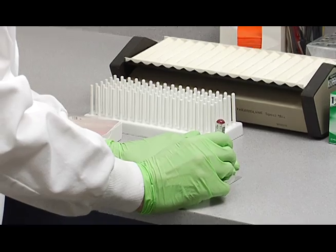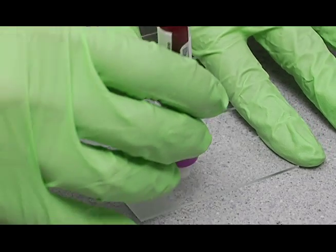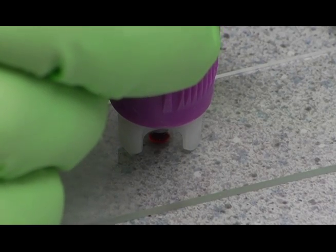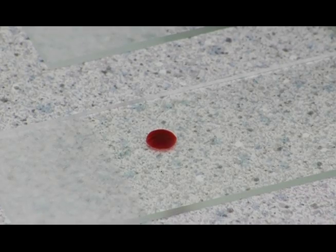Then place a drop of blood right there on your slide next to the frosted edge but not on it. You want it right in the center there. And that's a perfect-sized drop right there.